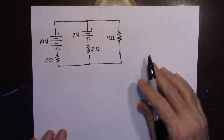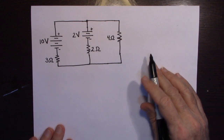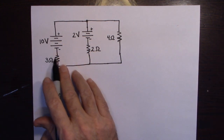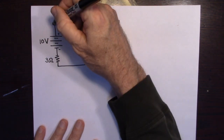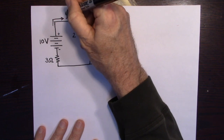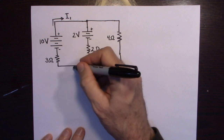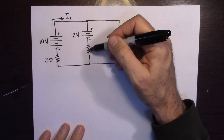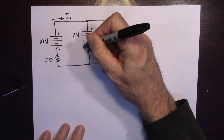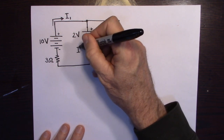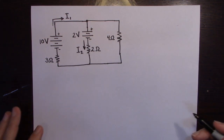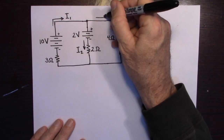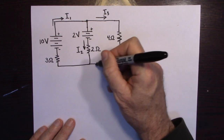We're going to use Kirchhoff's loop rule and junction rules. We have to guess which way the current is flowing. Because this is a 10 volt battery, much more than the 2 volt battery, I'm going to guess the current here is flowing this way — I'll call that I1. This whole branch is I1. The current in the middle branch I'll guess is going down — that's I2. And this would be I3.